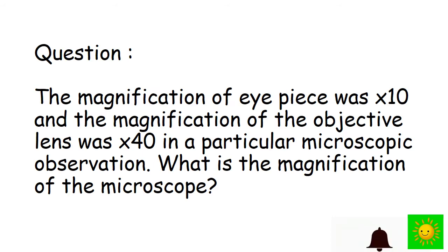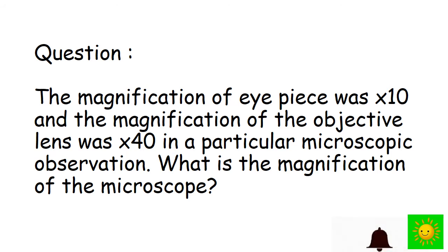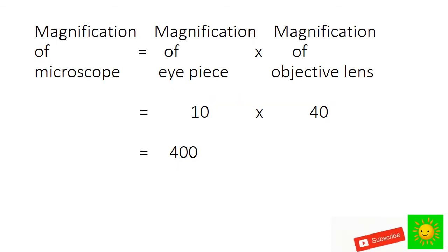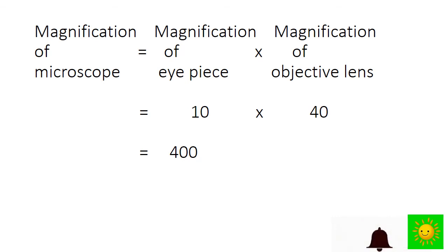Let's solve a problem. The magnification of the eyepiece is 10 times and the magnification of the objective lens is 40 times. What is the magnification of the microscope? Using the formula: magnification of eyepiece is 10 times, magnification of objective lens is 40 times. The answer is 400. The magnification of the microscope is 400.